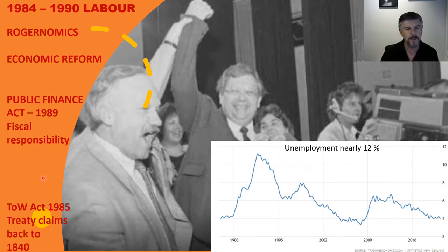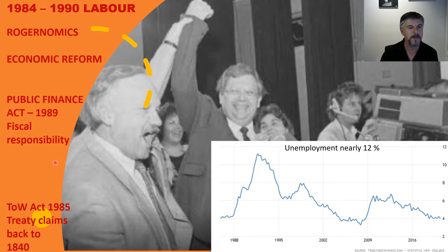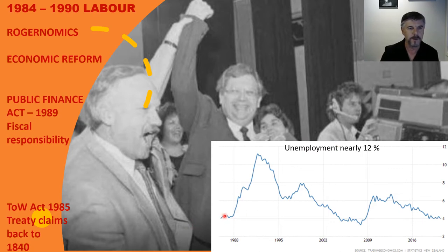During that period they also amended the Treaty of Waitangi Act in 1985, allowing claims back to 1840. It is my personal opinion that the Public Finance Act and the Treaty of Waitangi Act are the two most destructive pieces of legislation New Zealand has ever had. This presentation focuses on the Public Finance Act. When Labour got in from 1984, the result of fiscal responsibility was rising unemployment — when the government doesn't spend much into the economy, unemployment rises and people basically get poor.